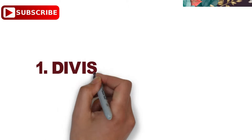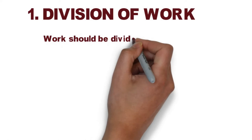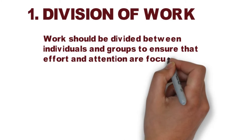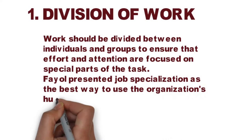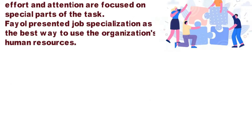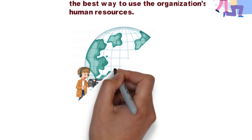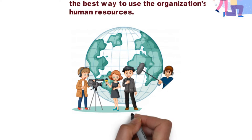Principle number one: Division of Work. Work should be divided between individuals and groups to ensure that efforts and attention are focused on a special part of the task. Fayol presented job specialization as the best way to use the organization's human resources. For example, at the time of news reporting there are different individuals and groups involved like news anchor, reporter, producer, news writer, editor, camera operator, etc.